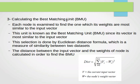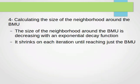After that, we calculate the best matching unit. Each node is examined to find the one whose weights are most similar to the input vector. This unit is known as the best matching unit. This selection is done by Euclidean distance formula, which is a measure of similarity between two datasets. The distance between the input vector and the weights of each node is calculated to find the BMU. Basically, we're trying to find, for each data point, the node which has the closest weight.